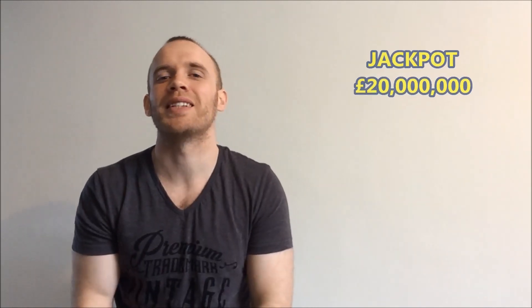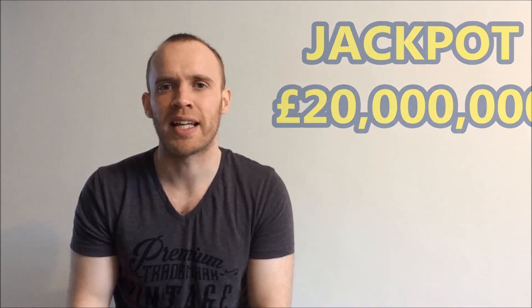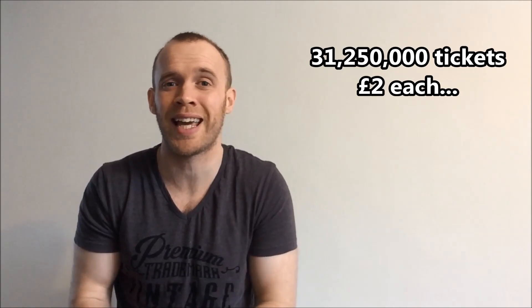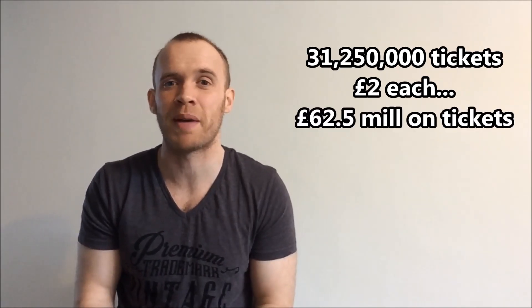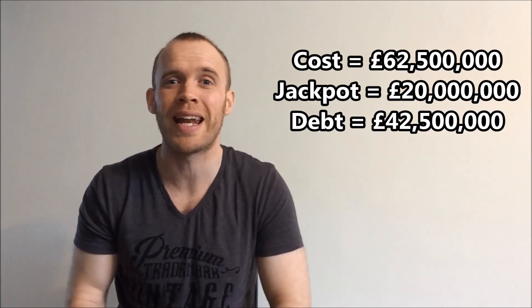So assuming there's no inflation, you can collect your prize, which is 20 million pounds. Before you start celebrating, we should work out how much you've spent on tickets. So you've played the lottery 31.25 million times, two pounds a ticket, 62.5 million spent on tickets. So even though you've just won the jackpot, you're 40 million out of pocket.